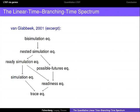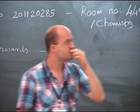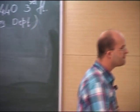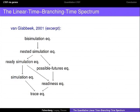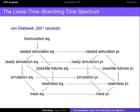What van Glabbeek did — his contribution — was to collect most of these into this spectrum where the arrows mean implication. Bisimulation equivalence is the finest one, trace equivalence is the coarsest one. Most of them also have a pre-order version. Instead of considering simulation equivalence, you can also consider simulation pre-order. The question then is not whether one process simulates the other and vice versa, but whether T simulates S only. So it becomes rather large already, the spectrum.